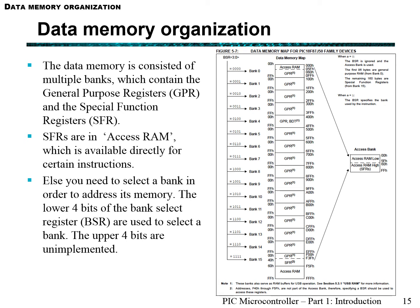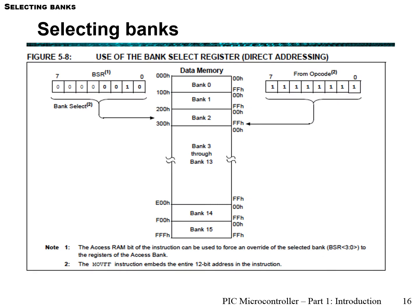Special function registers avoid this bank select using what's called an access bank or access RAM. When you need to address a special function register, you just call the last 8 bits — the least significant bits — and the most significant bits are located in this access RAM. This allows you to access special function registers without selecting a specific bank. As you can see in this image, we have 16 banks within our PIC. The opcode addresses 12 bits altogether — that's why we have the concept of selecting banks. When you select a bank, it selects the 4 most significant bits, and your opcode determines the other 8.